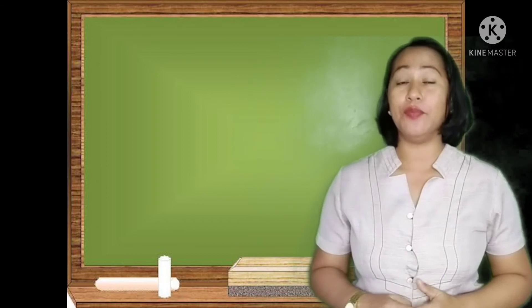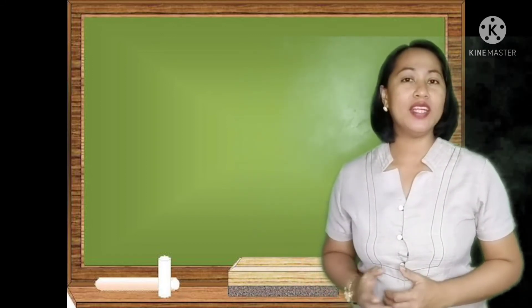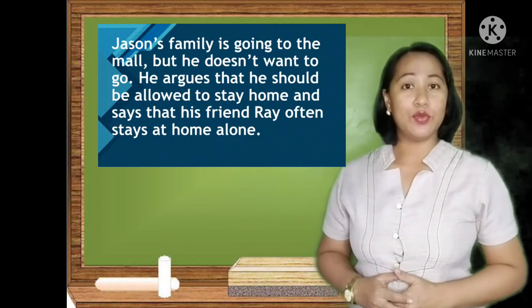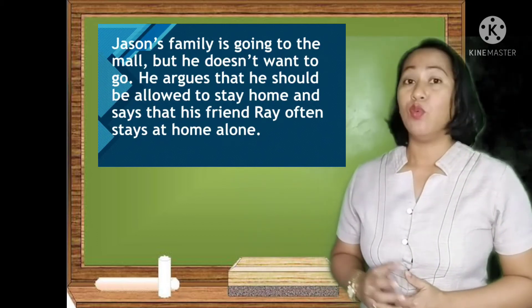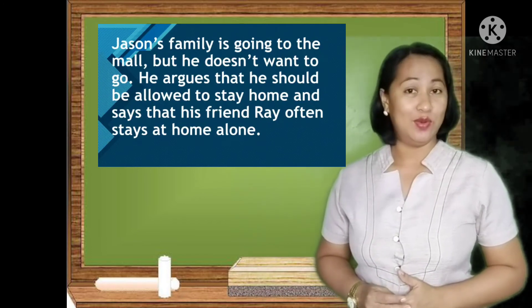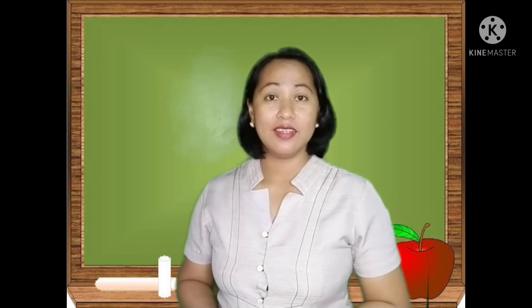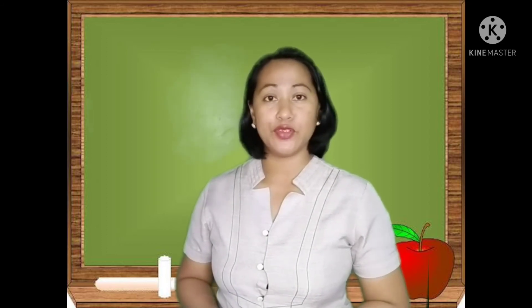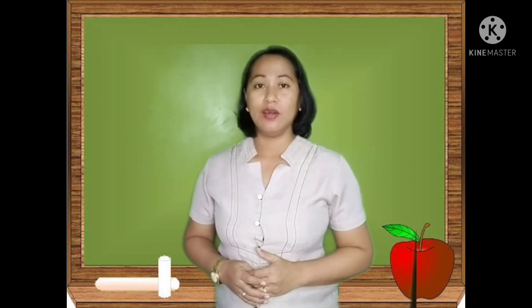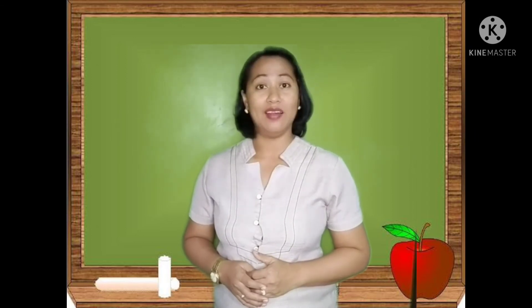Let's check your answers from the scenario. Jason's family is going to the mall; Jason argues that he should be allowed to stay at home and says that Ray often stays at home alone. Was Jason able to provide valid evidence to support his claim? Unfortunately, Jason failed to provide valid evidence. His reason wasn't enough — he missed citing an acceptable source or example to support his claim. Just because Ray can stay home does not mean Jason can do it as well. It was not an acceptable reason.